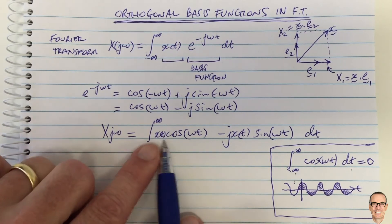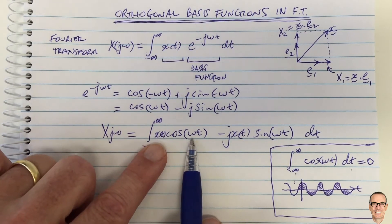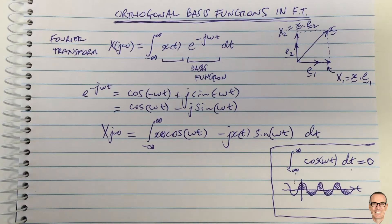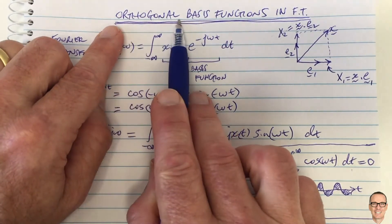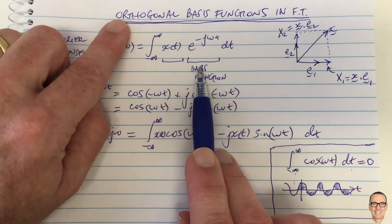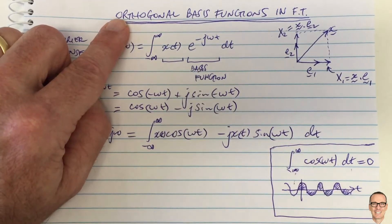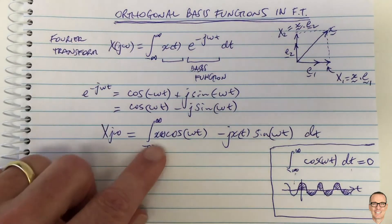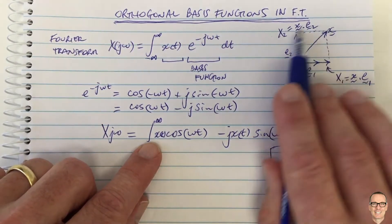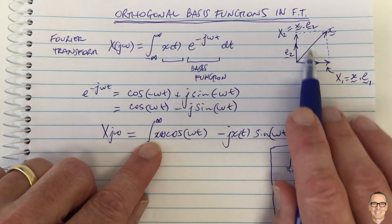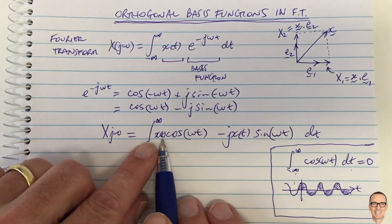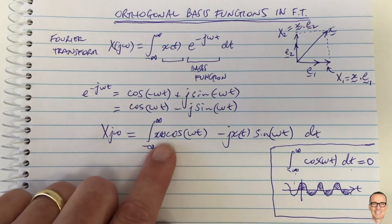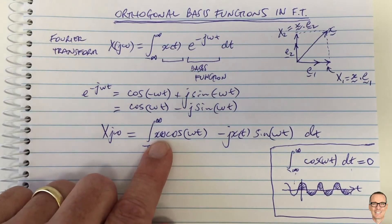Now over here we've got x times cos — that's something we're going to think about. Returning to our question: why are these basis functions orthogonal? What does it mean for them to be orthogonal? To test this out, let's see what would happen if we project one of the basis functions into the direction of the other.